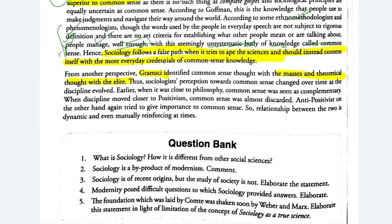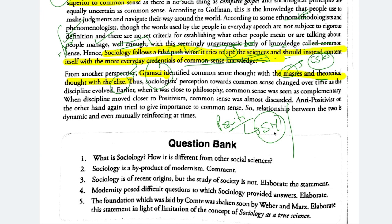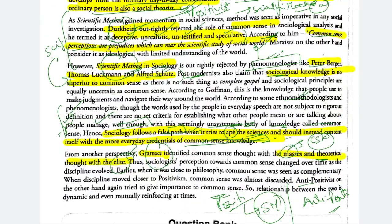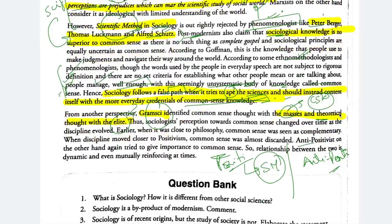Gramsci said that the masses operate on common sense knowledge, while theoretical scientific thought is something for the elite. Those who believe in the scientific method are your positivists, while those who say we need to include common sense knowledge are anti-positivists. We will study these two schools of thought in the next chapters. Our first chapter is now complete. If you like this video, give a thumbs up, subscribe, and share. Bye!